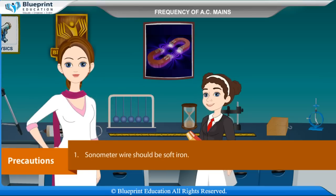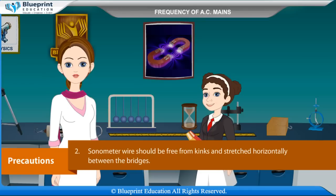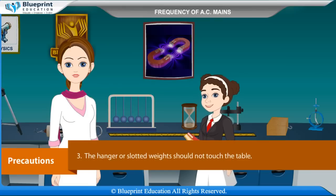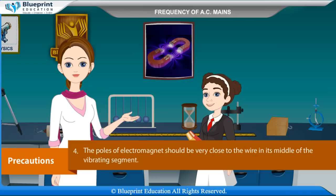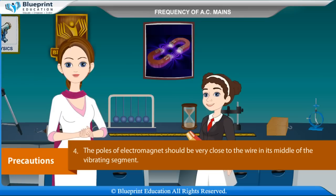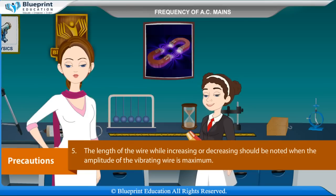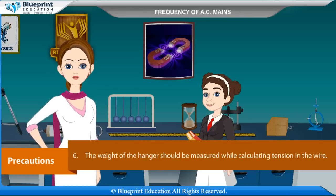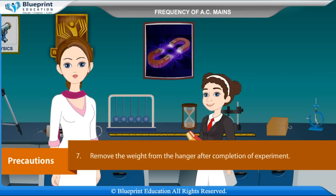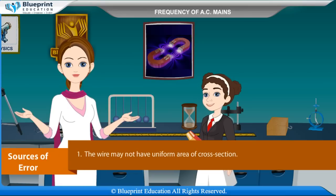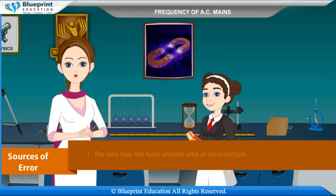Precautions: The sonometer wire should be soft iron. The sonometer wire should be free from kinks and stretched horizontally between the bridges. The hanger or slotted weights should not touch the table. The poles of the electromagnet should be very close to the wire at the middle of the vibrating segment. The length of the wire while increasing or decreasing should be noted when the amplitude is maximum. The weight of the hanger should be included when calculating tension.